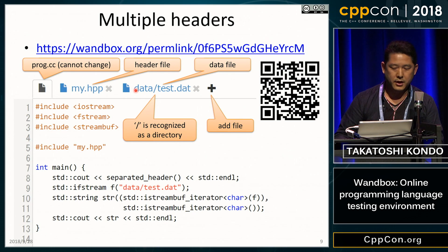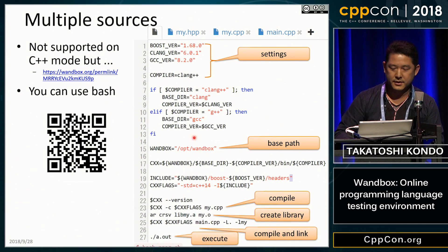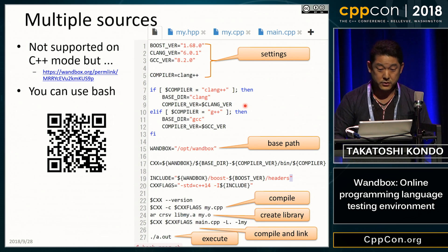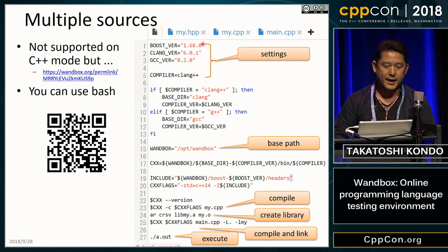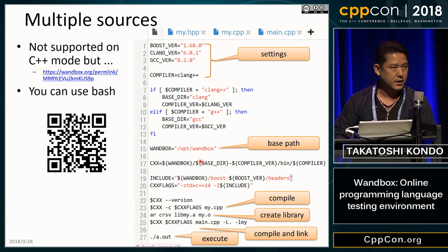If you really want to do multiple translation units, you can do it using Bash. You can choose the same variety of compilers and Boost library versions. The important point is the base path: /opt/wandbox — that is the Wandbox compilers and libraries location.